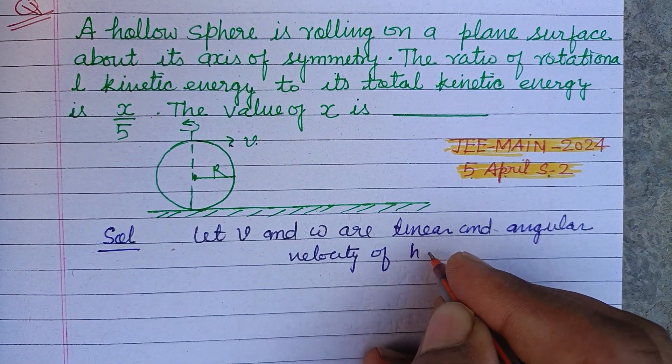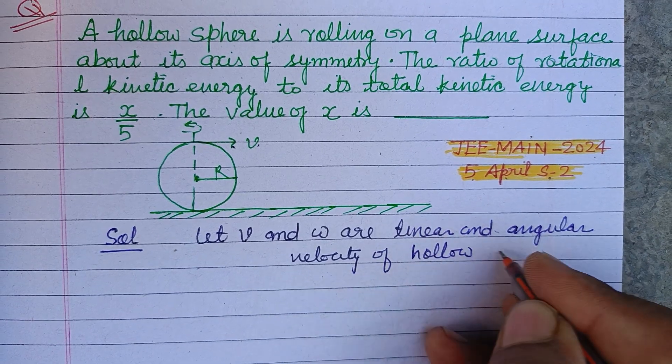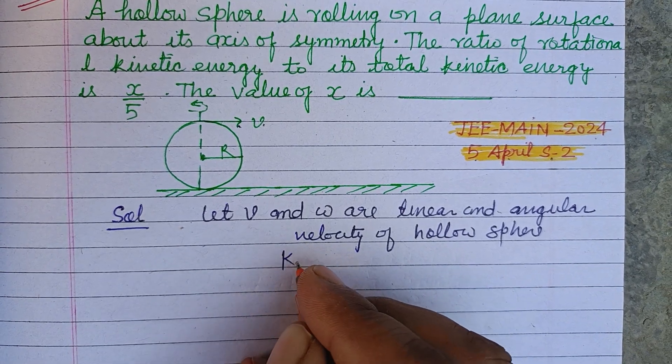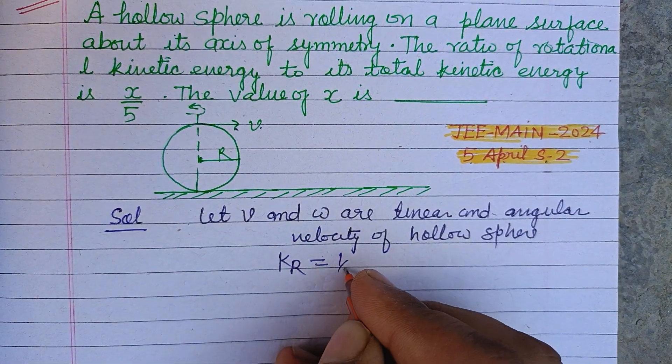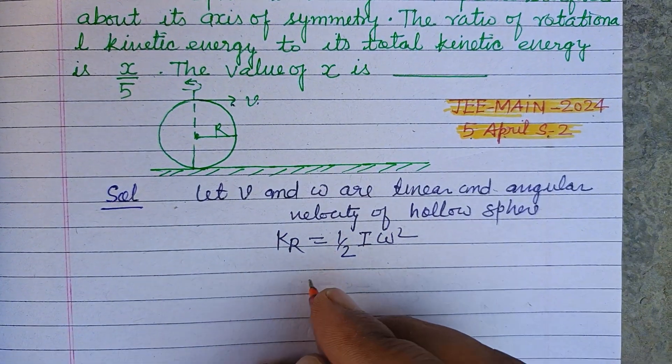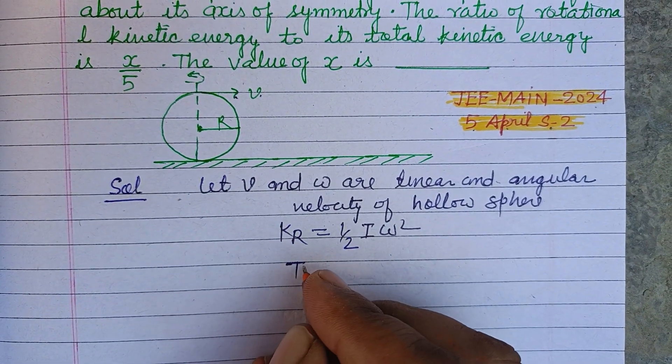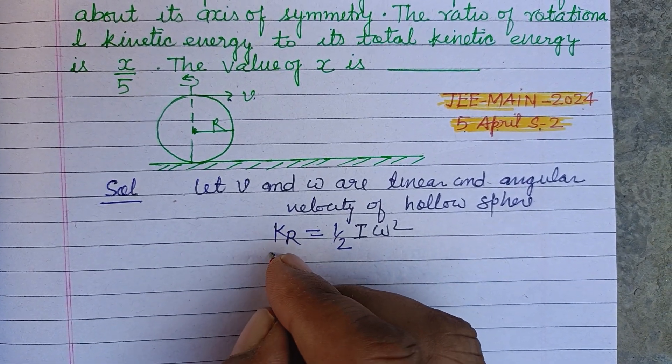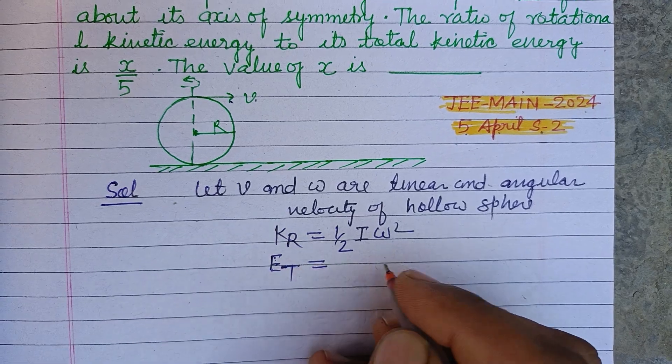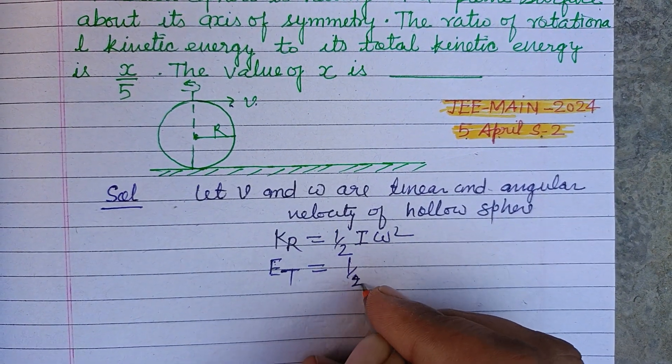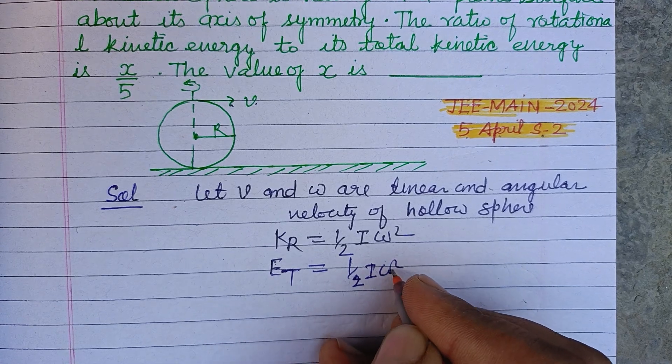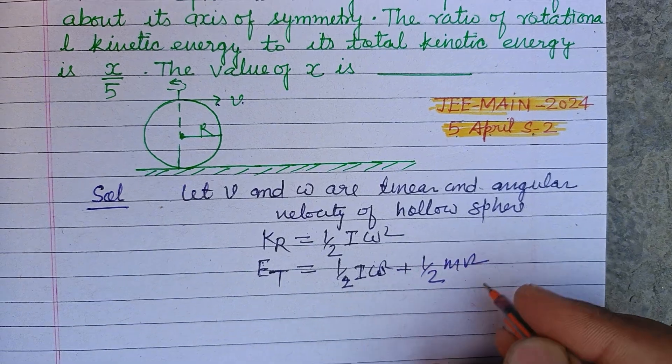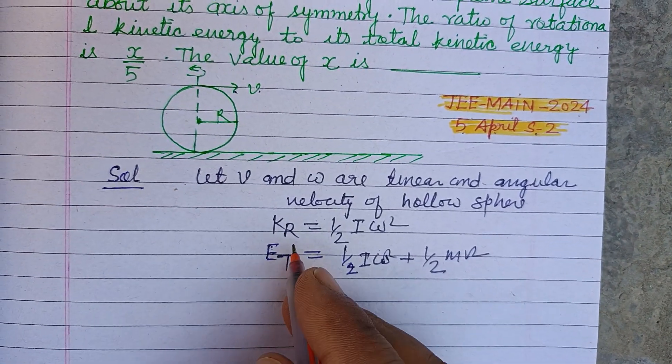Then its rotational kinetic energy K_R equals half I omega squared, and total energy E_T equals half I omega squared plus linear kinetic energy half m v squared.